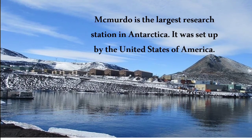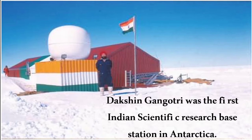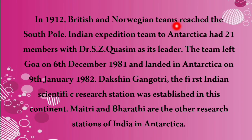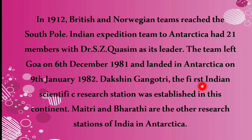McMurdo is the largest research station in Antarctica, set up by the United States of America. Dakshin Gangotri was the first Indian scientific research base station in Antarctica. In 1912, British and Norwegian teams reached the South Pole. The Indian expedition team of 21 members, led by Dr. S.S. Qasim, left Goa on 6 December 1981 and landed in Antarctica on 9 January 1982. Maitri and Bharati are the other Indian research stations in Antarctica.